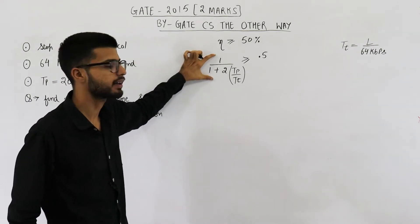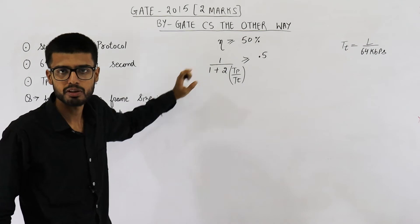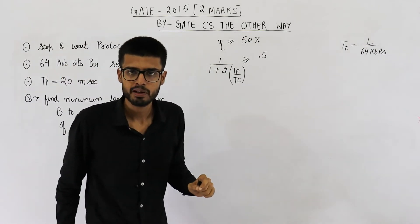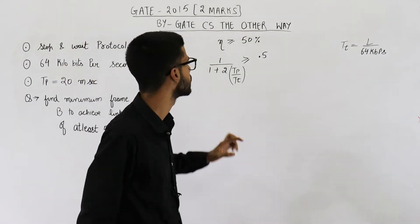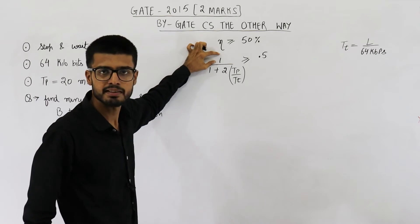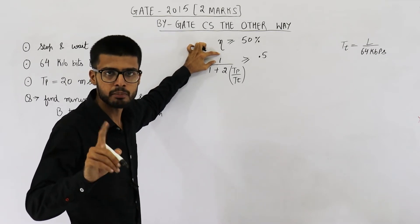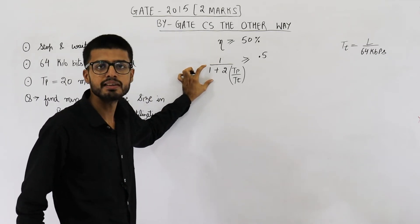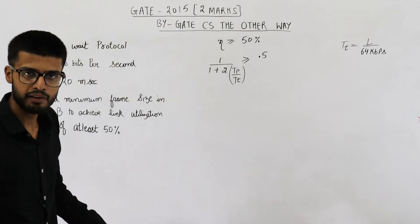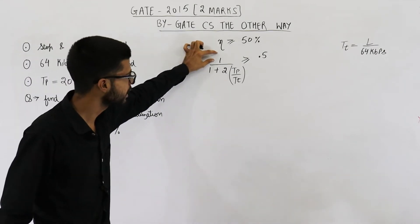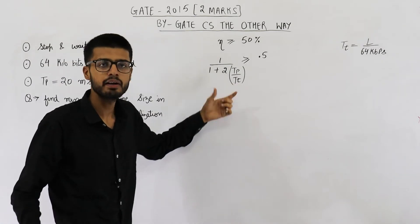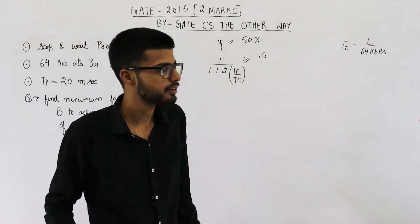How did I get this formula 1 divided by 1 plus 2a? In case of stop and wait, sender window size is 1. So sender is actually sending only one frame. Whereas in best case, we can send 1 plus 2a frames. Efficiency will be what we are sending divided by what we can send in the best case.